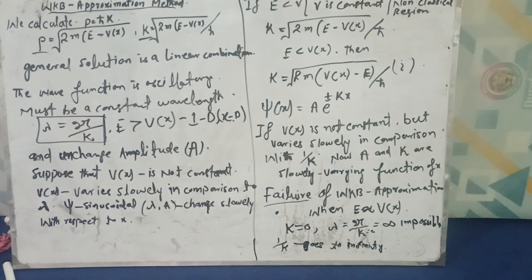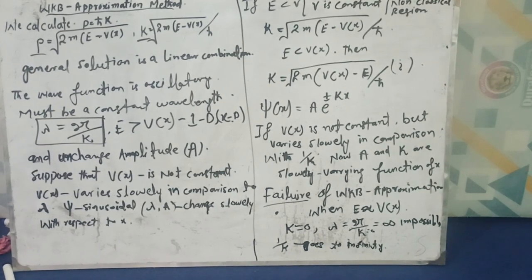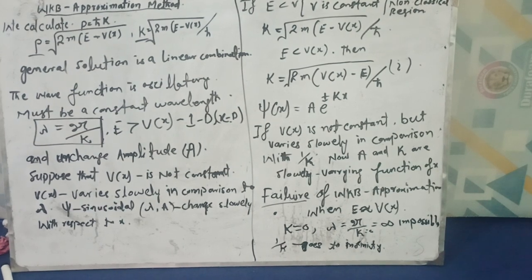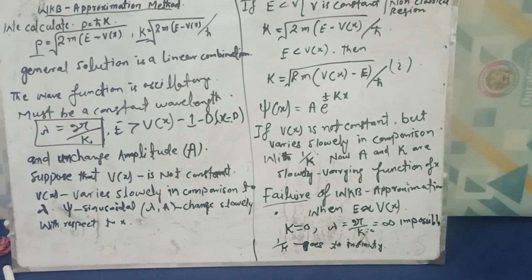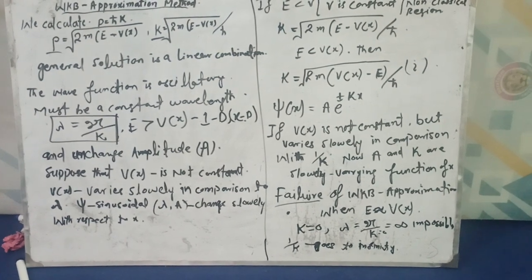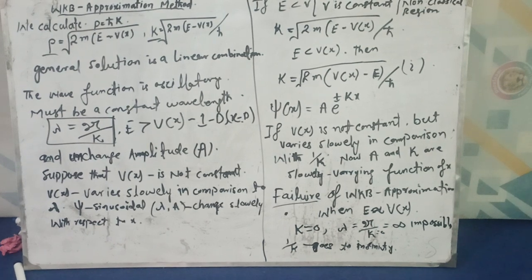Now if the potential is not constant and varies slowly in comparison with the wavelength, so 1/k... Now amplitude and vector k are slowly varying with respect to x.